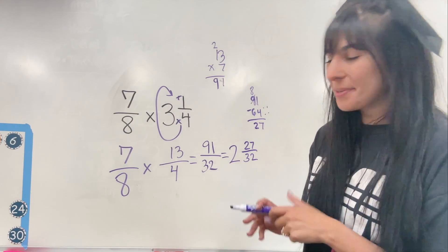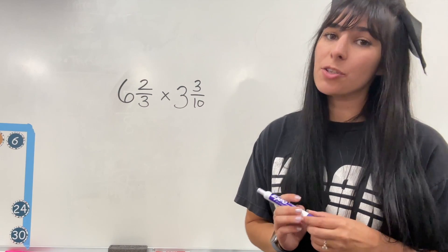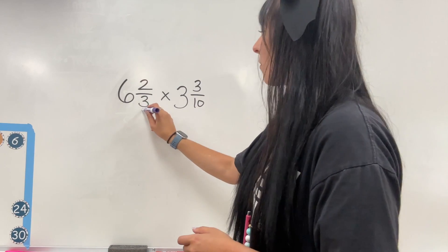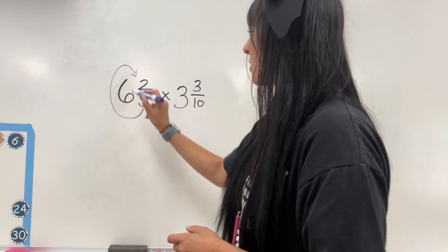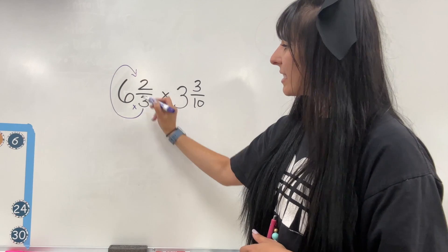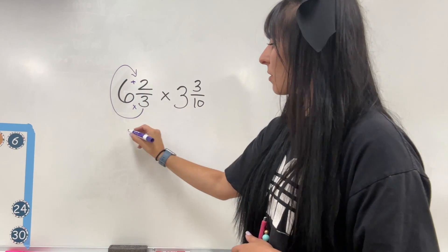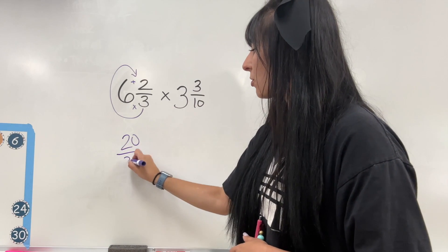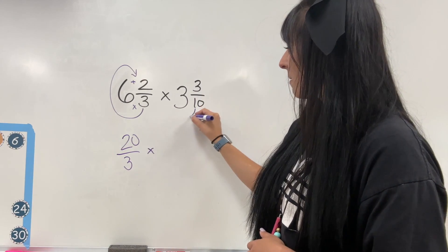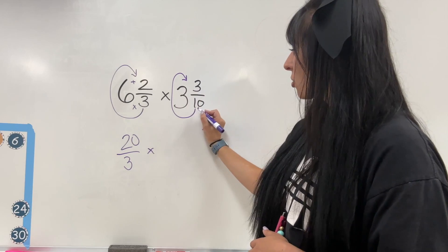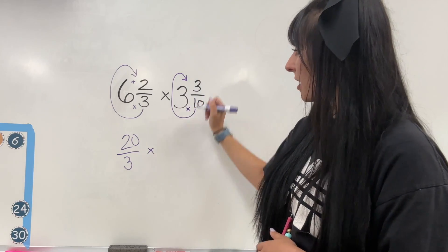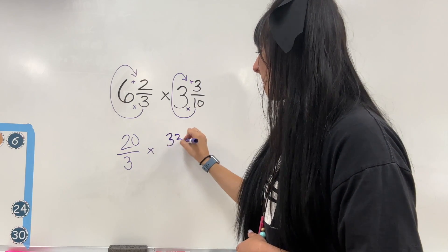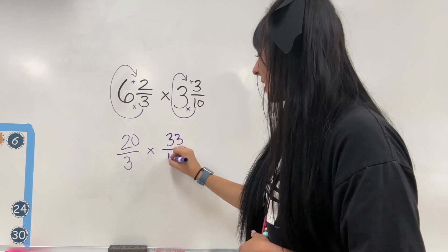Let's go ahead and do another one. So in this equation, I have two mixed numbers that I need to turn into improper fractions in order to multiply them. So I'm going to go ahead and reverse C this one. Three times six is 18 plus that two is going to give me 20 over three. Now let's do the same thing for this one. So 10 times three is 30 plus that leftover three gives me 33 over 10.